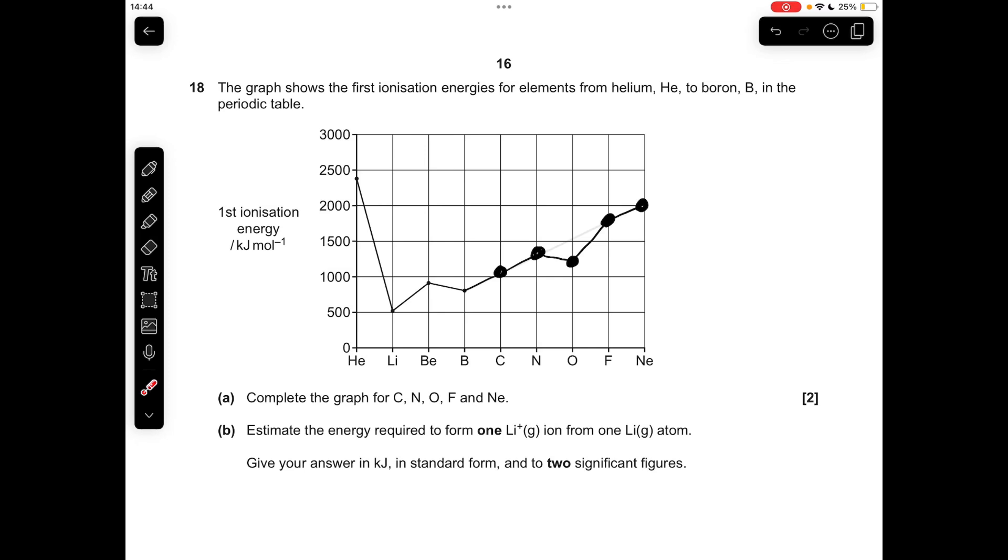But for the case of oxygen, it's down to the fact that the electron's been removed from a paired P orbital. And the other thing to bear in mind is neon's first ionization energy has got to be less than helium's. They're both noble gases, but neon's got that extra shell, so it's got a larger atomic radius and more shielding.